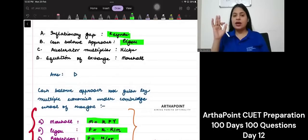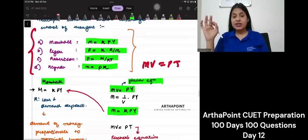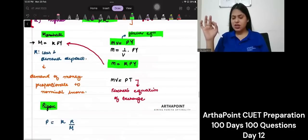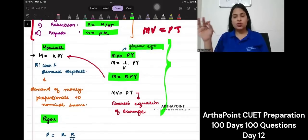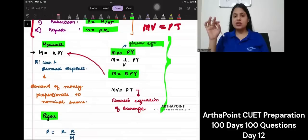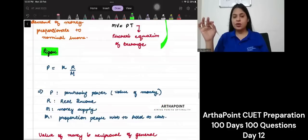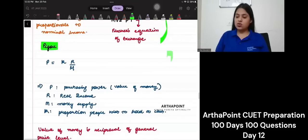Now, let's go to the next one. Accelerator multiplier was given by Higgs. That is also a correct statement. I have just mentioned cash balance approach. If you want, you can pause your video for a second and try to look at these equations. Please have a look at this one also.